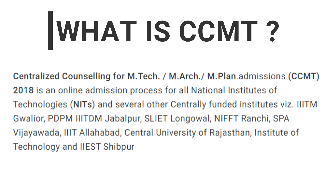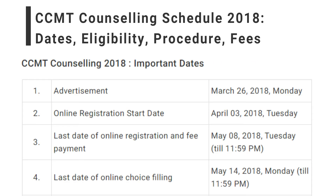After each round of counselling, candidates can view their status. If a seat is allotted in a particular round, the candidates can accept it or look for a further college in the next round by locking the seat, else wait for the next round. The online registration will start from 3rd April and the admission is based on the candidate's GATE score. GATE 2018 result was declared on 17th March and many candidates must have started the application process for various institutes.